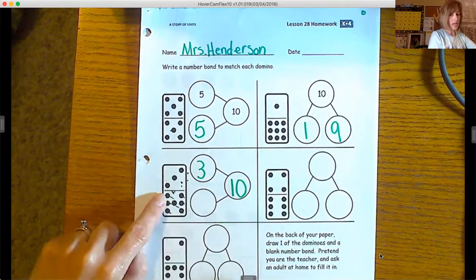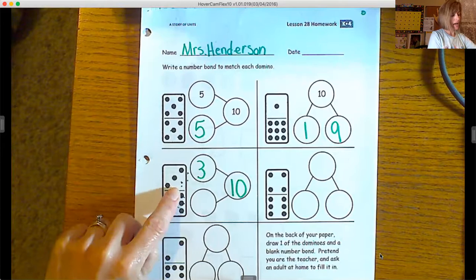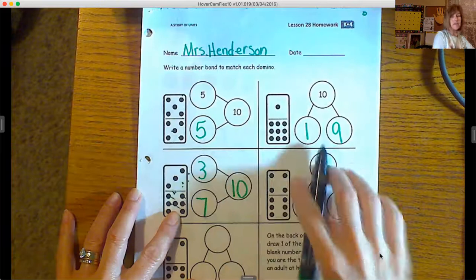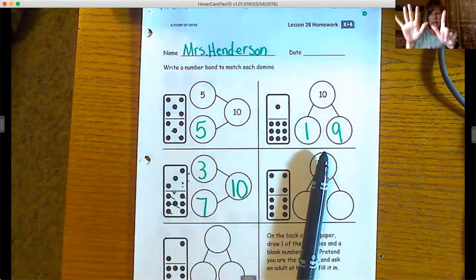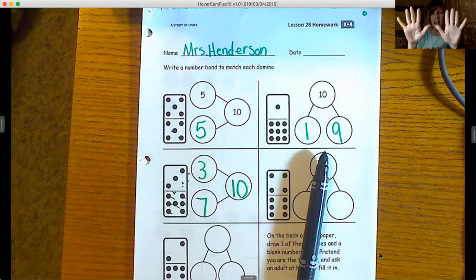And then down here we'll count one, two, three, four, five, six, seven, so we'll write seven there. And I know if I have seven and I add three to it—eight, nine, ten—I will get ten.